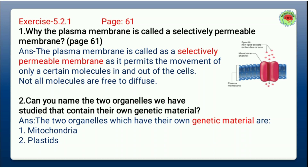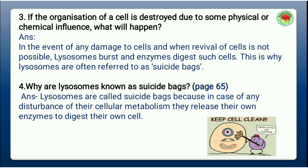Question number two: Can you name two organelles that contain their own genetic material? The two organelles which have their own genetic material are: first, mitochondria, and second, plastids.